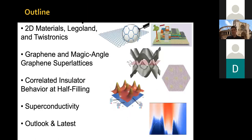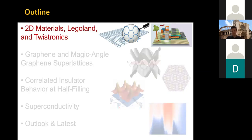So with this introduction, here is the outline of today's talk. I will first tell you about 2D materials, Lego-land, and twistronics. Then I'll discuss graphene and in particular magic angle graphene superlattices, followed by our observation of correlated insulator behavior at half-filling, then superconductivity, and then the outlook and latest results. Tomorrow I will focus more on the latest developments.